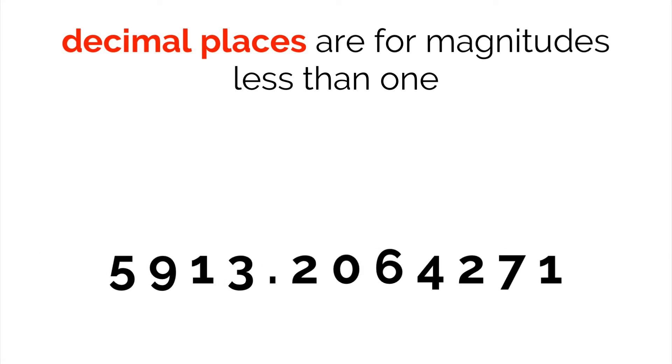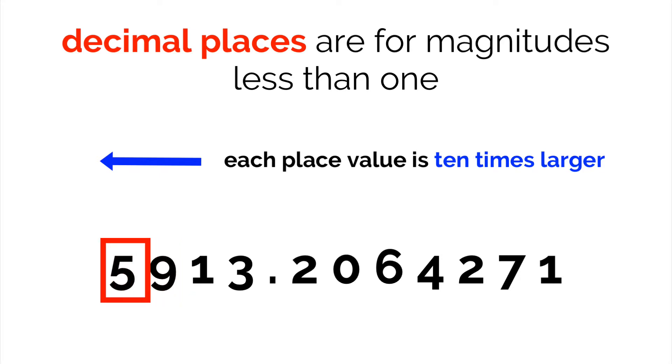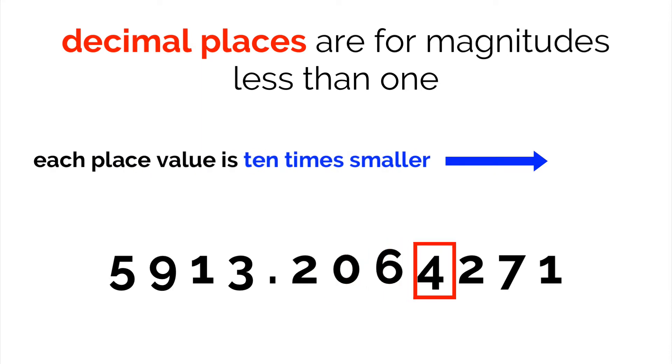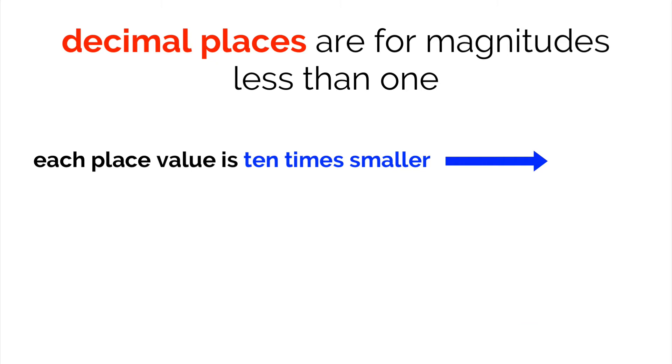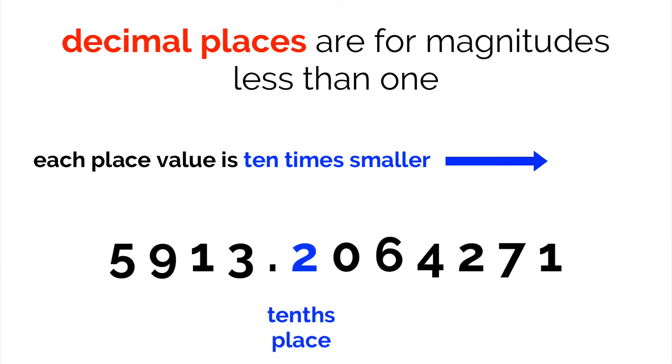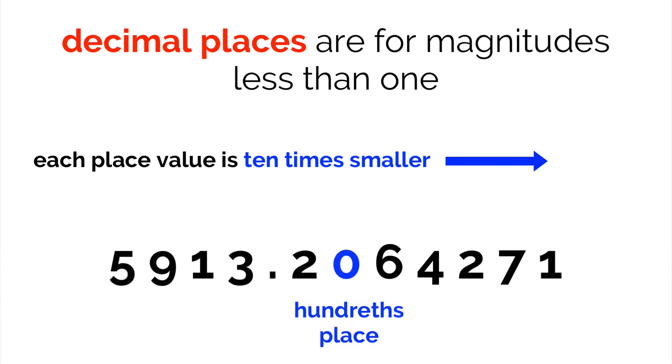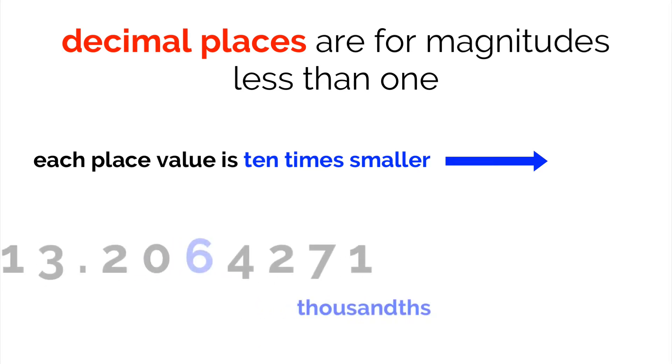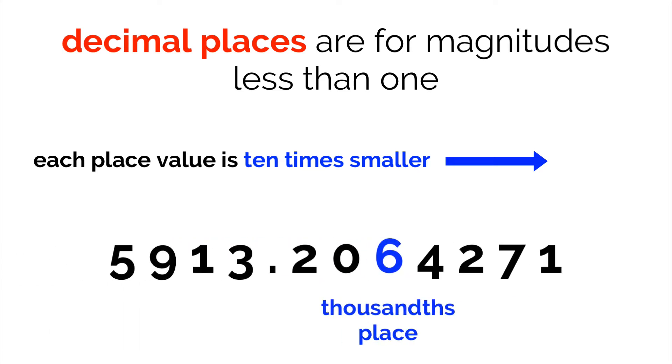The place values to the right of the decimal work just like the regular ones. As we go to the left, each place value is 10 times greater than the previous, while as we go to the right, each place value is 10 times smaller. So after the tenths place, we get the hundredths place, and the thousandths place, and so forth.